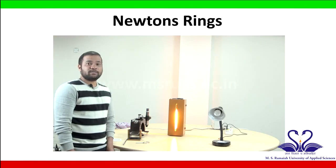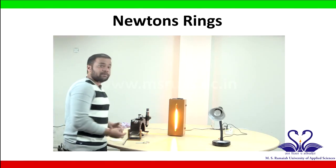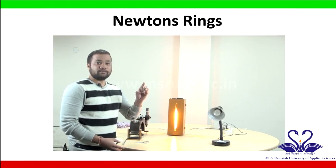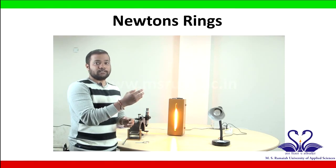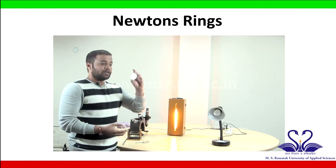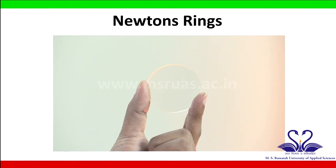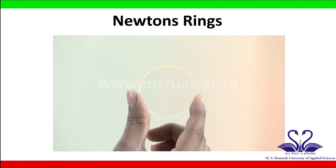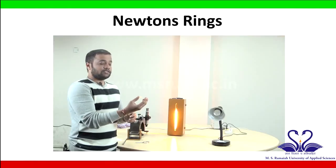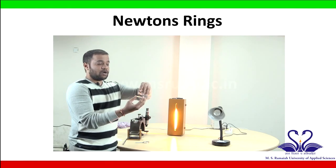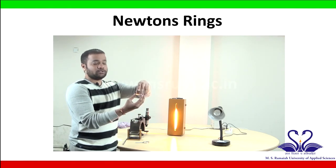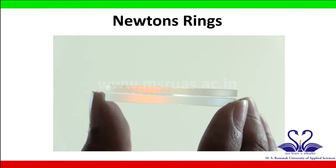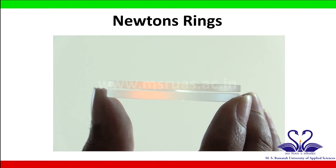Let us start the experiment. Let us take the Newton's ring apparatus, which consists of a plano-convex lens and a plane glass. To differentiate them, the one which is thinner is the plano-convex, and the one which is slightly thicker is the plane glass. Let us mount the plano-convex on top of the plane glass so that the convex part, or the curved part of the lens, should touch the plane surface.